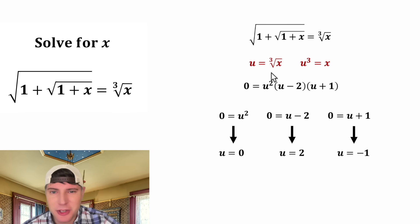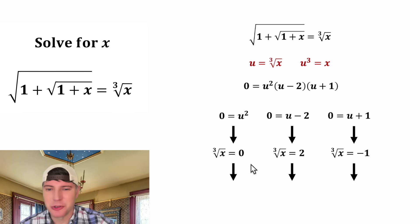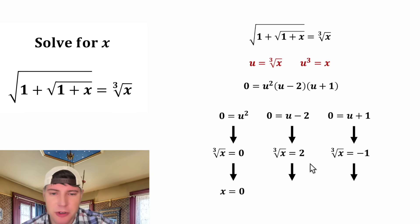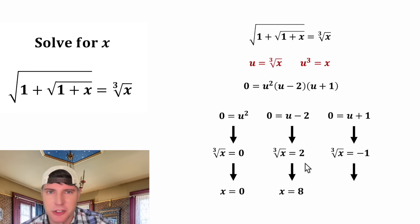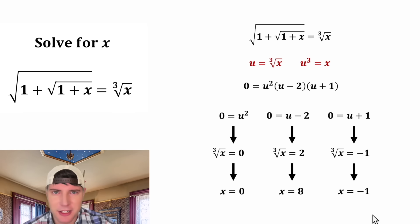Earlier we set u equal to the cube root of x, so let's substitute the cube root of x back in. The first solution will be true if x equals 0, because the cube root of 0 is 0. The second will be true if x equals 8, because the cube root of 8 is 2. And the third will be true if x equals negative 1, because the cube root of negative 1 is negative 1.